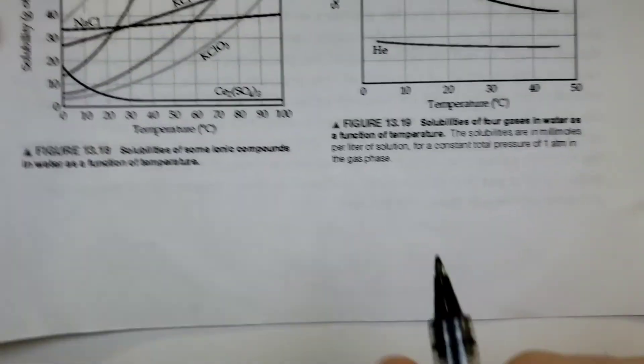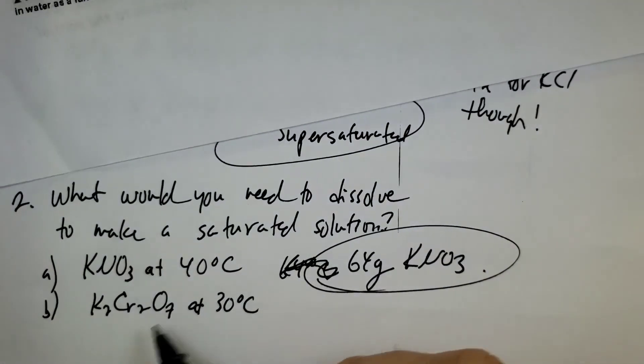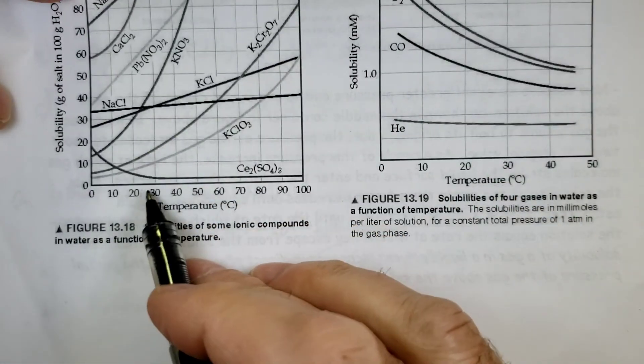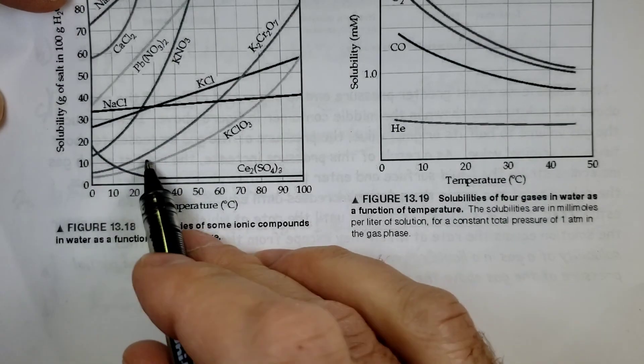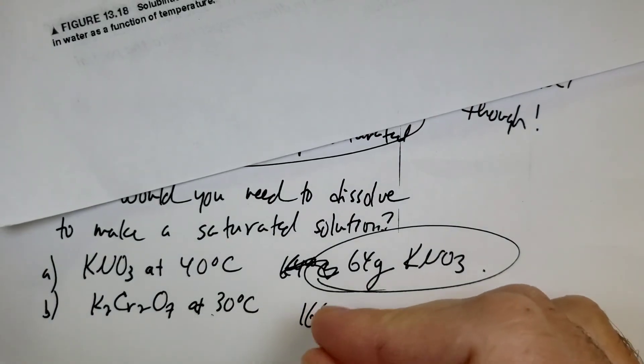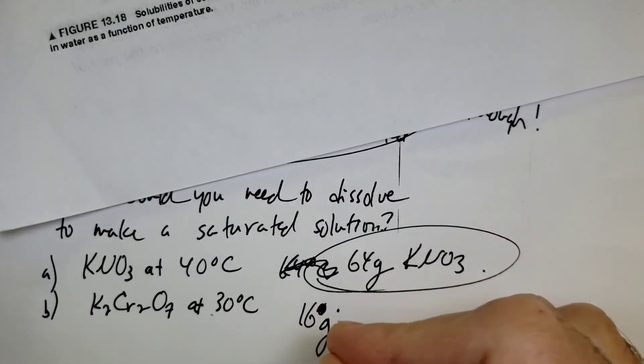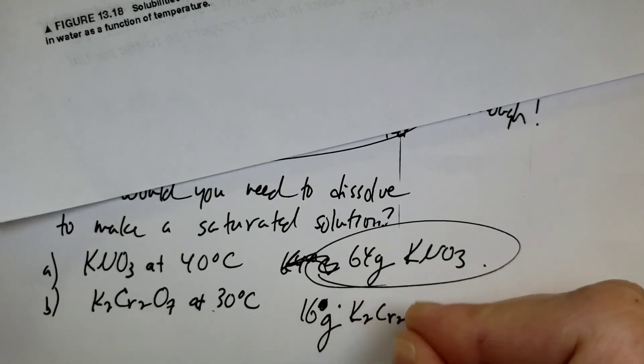And then K2Cr2O7. Here's K2Cr2O7 right here. At 30 degrees C, it looks like it's in between 10 and 20, maybe slightly a bit bigger than the halfway point. So 16 grams K2Cr2O7. Great. So that's how you do it.